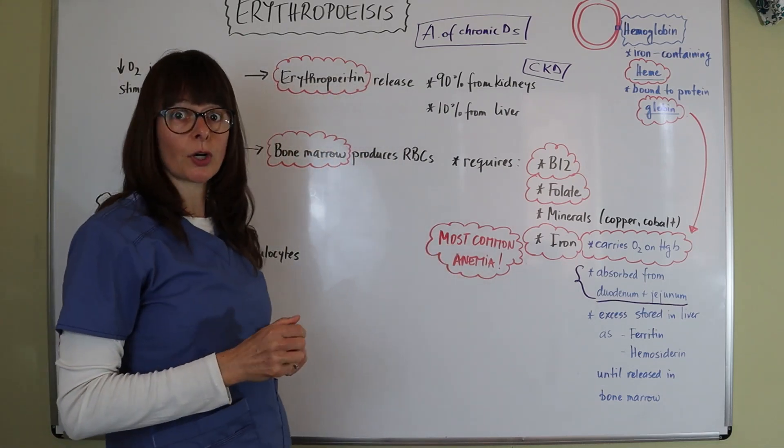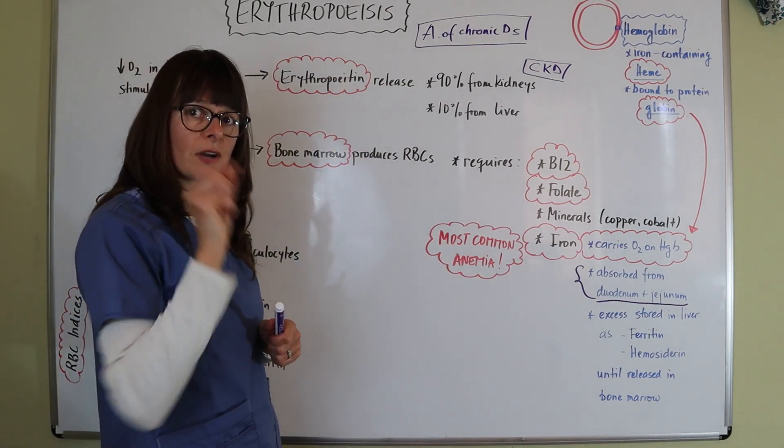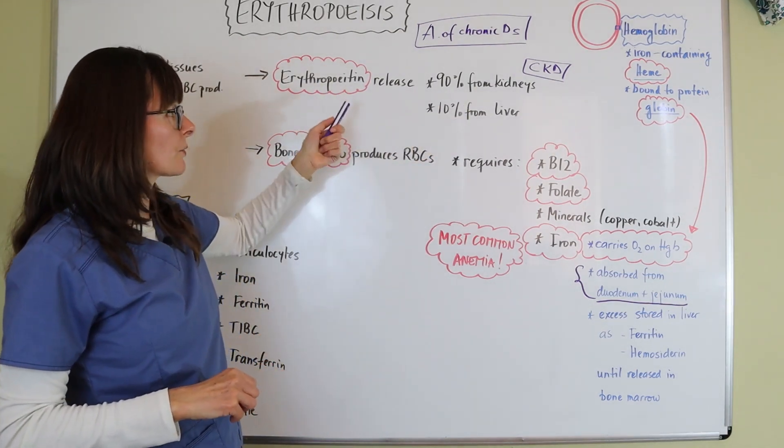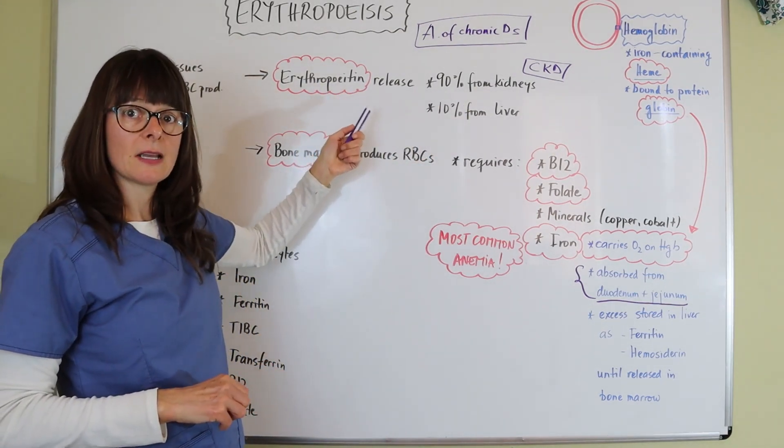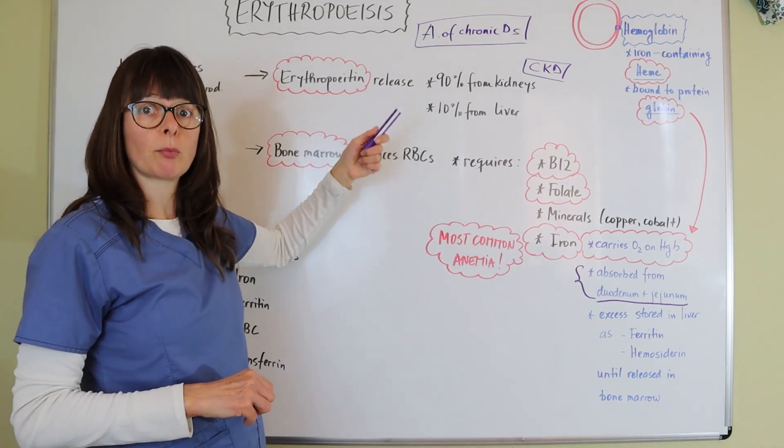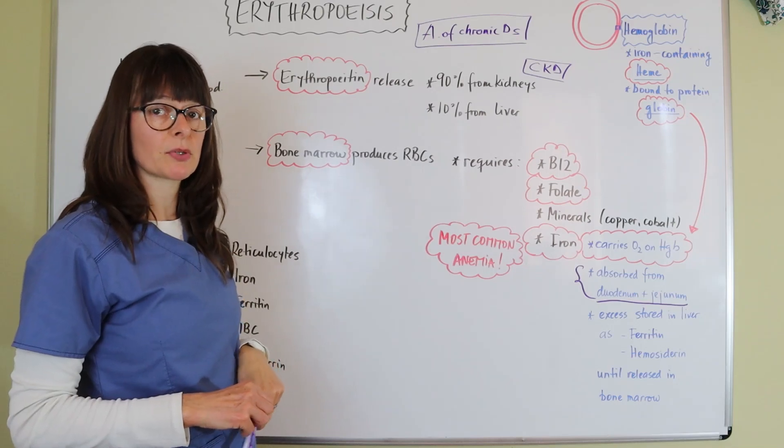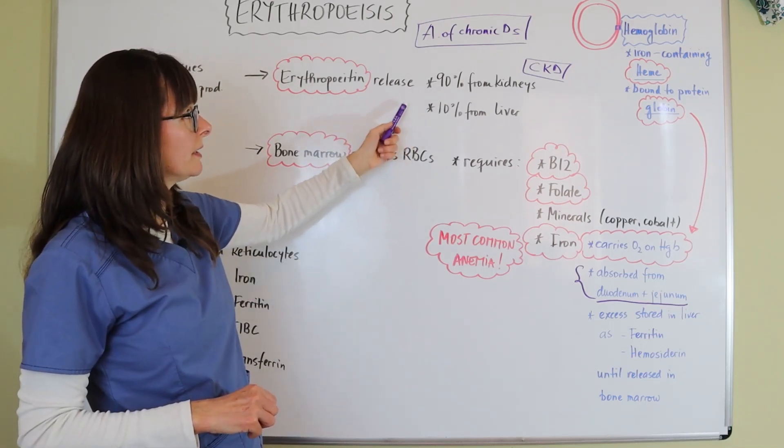These are patients that are on dialysis. Their kidneys are not working or only working to a very small portion. They cannot release that erythropoietin. So what they get is an injection of erythropoietin after the dialysis treatment to help with that red blood cell production. But those are chronic illnesses.